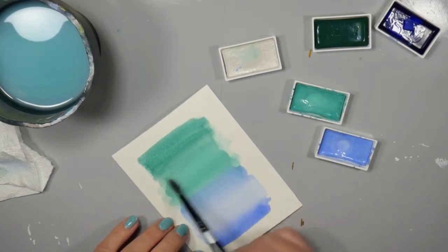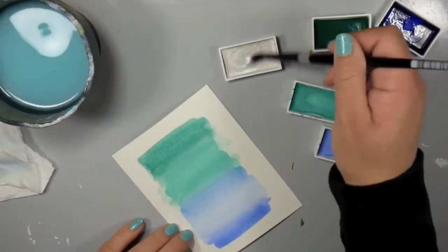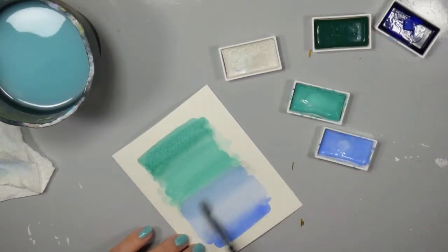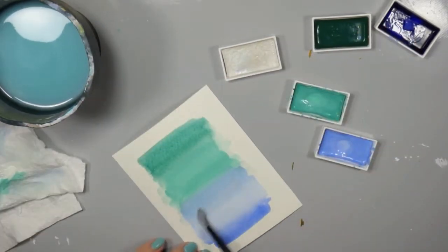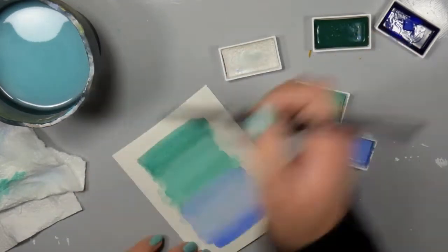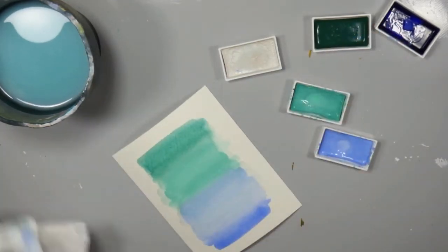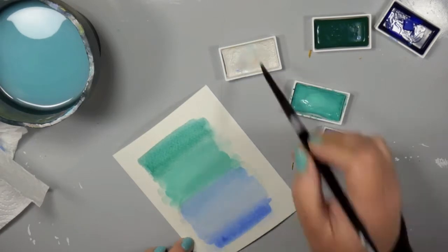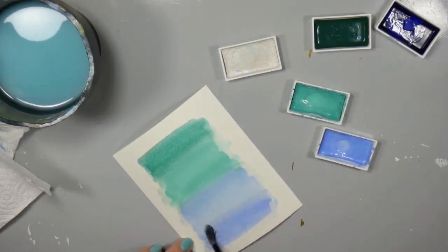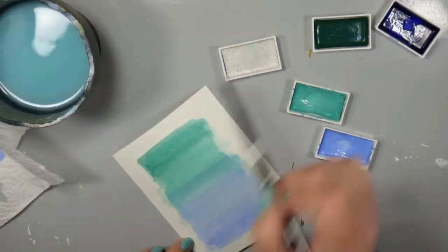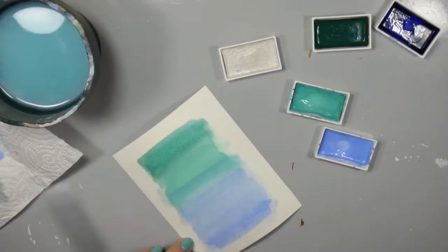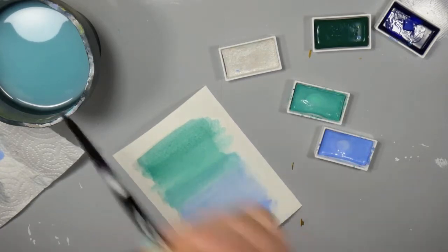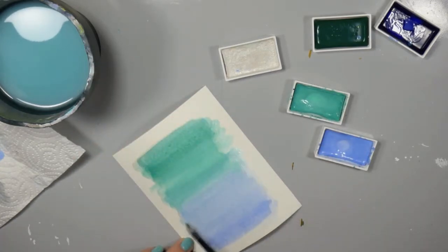And I'm pulling out this like silver pearlescent color from that same set, which is the reason that I got the 36 set, is to get these pearlescent colors. And I'm really excited because when I went to CHA, there's a whole metallic palette coming out to complement any of your Gansai Tambi watercolor palettes that you might have. So that's kind of a cool thing to look forward to.